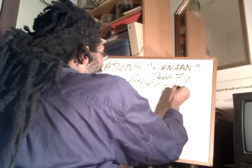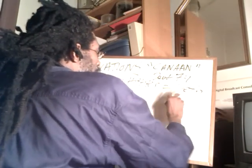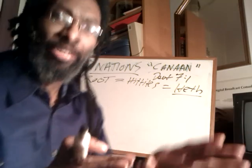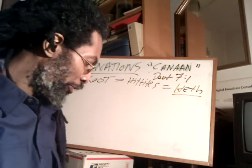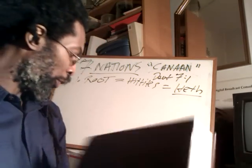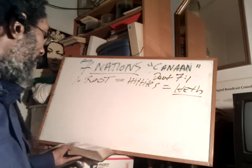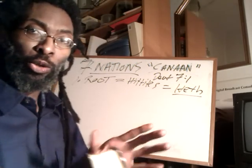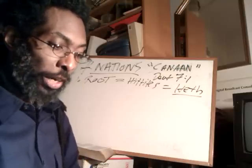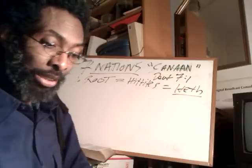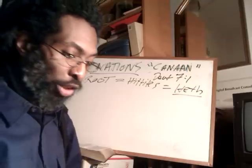The Hittites come from one named Heth. Now in the Metaphysical Bible Dictionary — it's good to have a Bible dictionary, but especially good to have a metaphysical one — because the true Christian walk is metaphysical. We have to understand these Old Testament types.